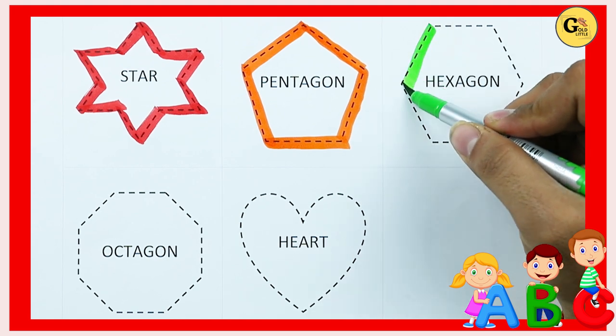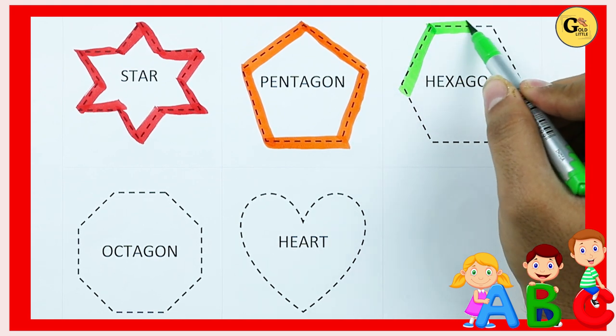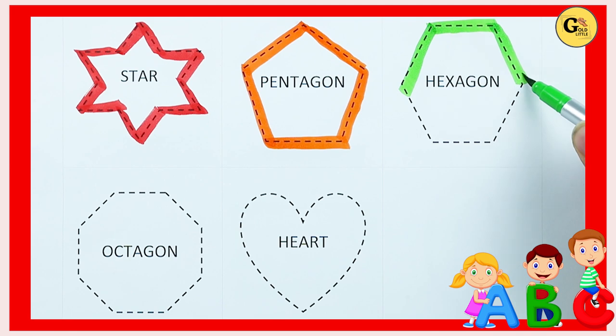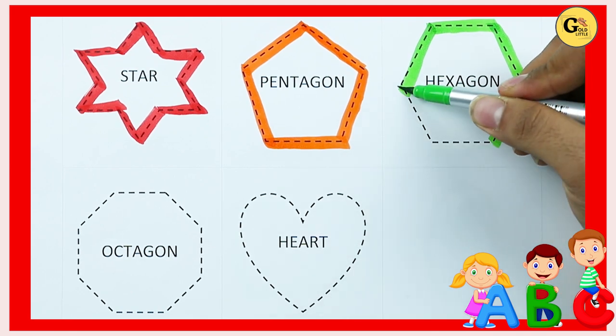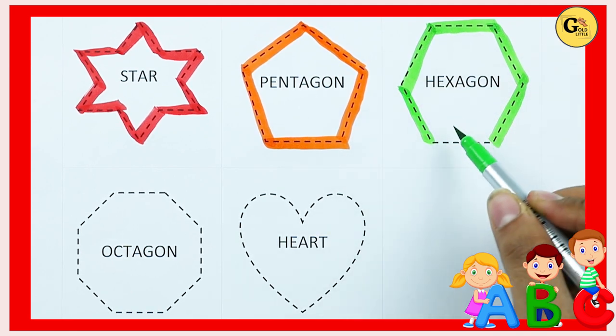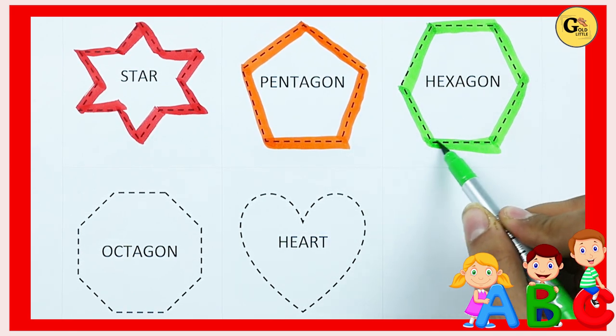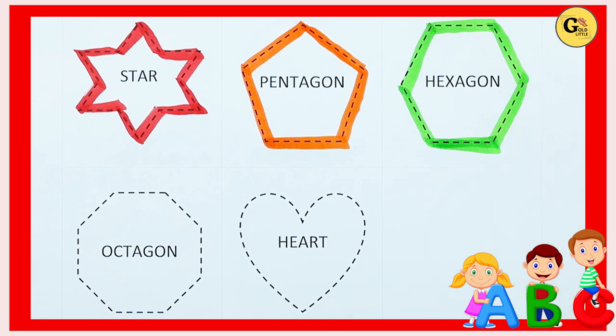Hexagon: one line, two line, three line, four line, five line, six line. It's a hexagon.